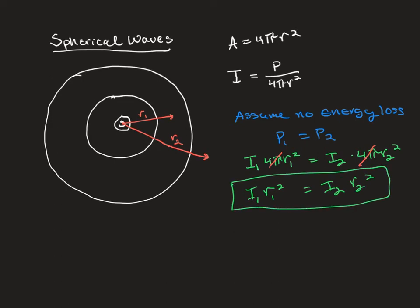So this allows us to see the relationship between intensities at two different distances. It depends upon the distance from the source squared. And intensity and distance are inversely related. So the further away from the source, so the larger r is, the lower the intensity of the sound is going to be.